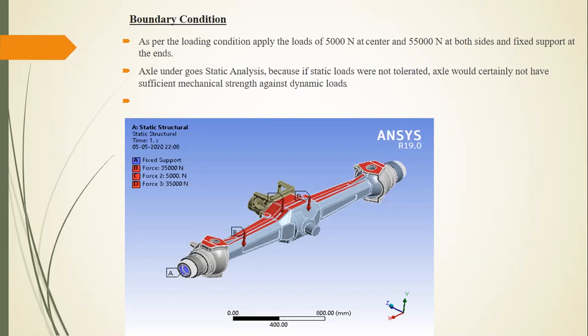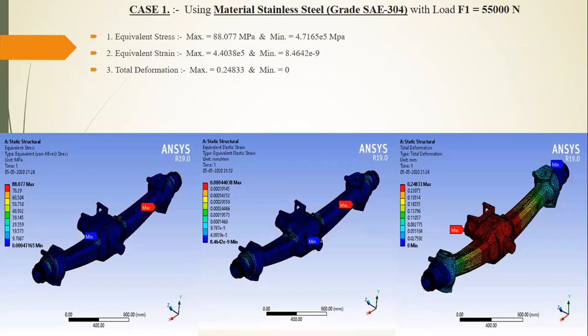In this study, static analysis is used because we concentrate on stress, strain, and total deformation of the material. If the axle cannot tolerate static loads, it would certainly be insufficient against dynamic loads. Therefore, we first perform static analysis, and after confirming sufficient static strength, we can proceed to dynamic and modal analysis.